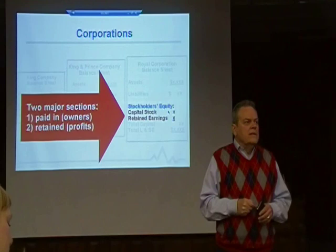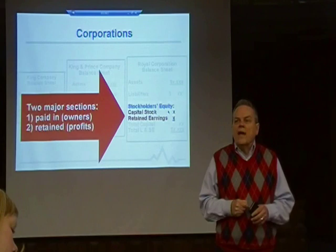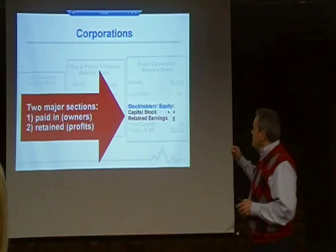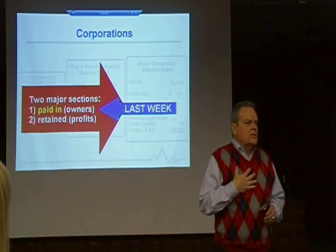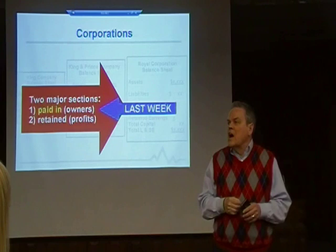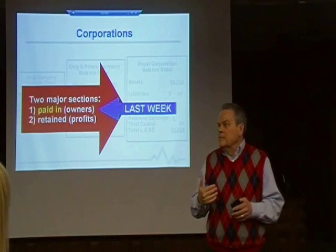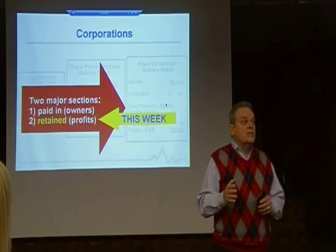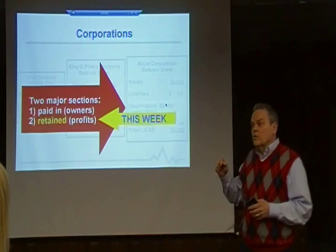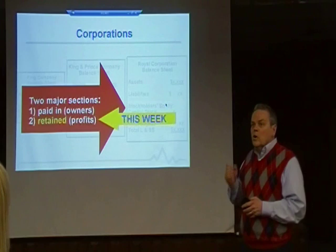This is a continuation of last week. Last week we learned that stockholders' equity was the new name for capital, and that there were two parts to stockholders' equity: paid-in and retained. We looked at paid-in last week — it was what owners invested in the business. The transaction between the owner and the business: when the business gets assets and responds by giving out shares of stock, that's paid-in capital. The other section we named last week was retained earnings.